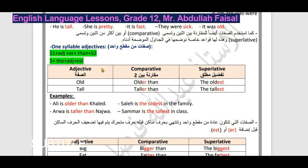إذا كانت الصفة من مقطع واحد مثل: old, tall, small - نأتي بالاسم الأول ونضيف للصفة ER، ثم كلمة than وهي ثابتة بمعنى 'من' أو 'أكبر من'، وبعد ذلك الشيء الثاني. مثلاً: Ali is older than Khalid - علي أكبر سناً من خالد. للتفضيل المطلق نضيف the ثم EST للصفة: the oldest, the tallest.